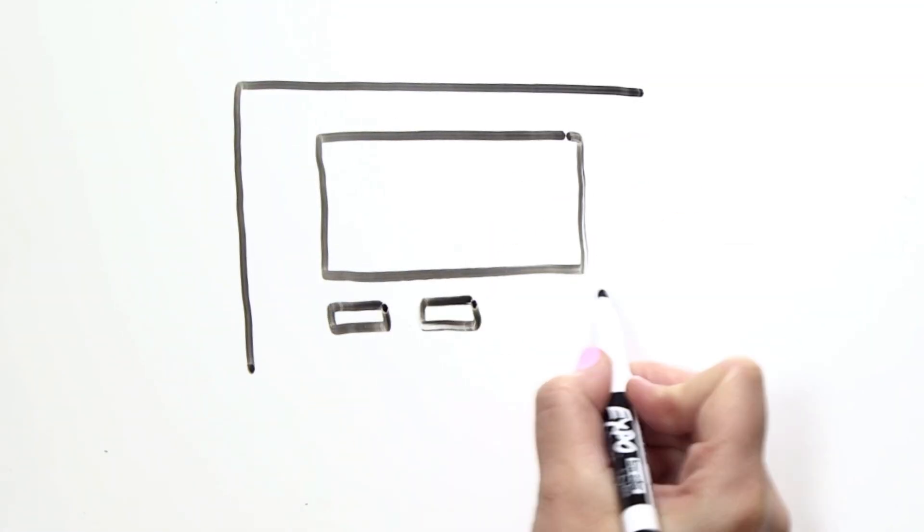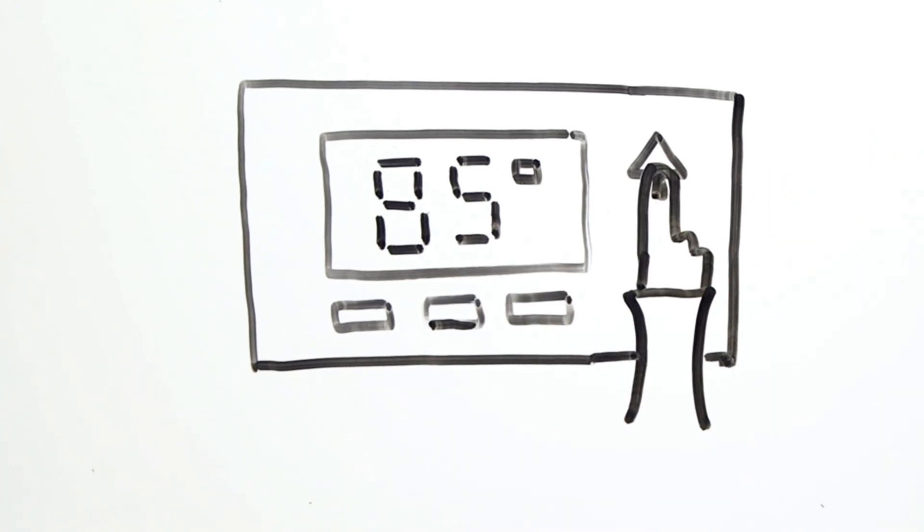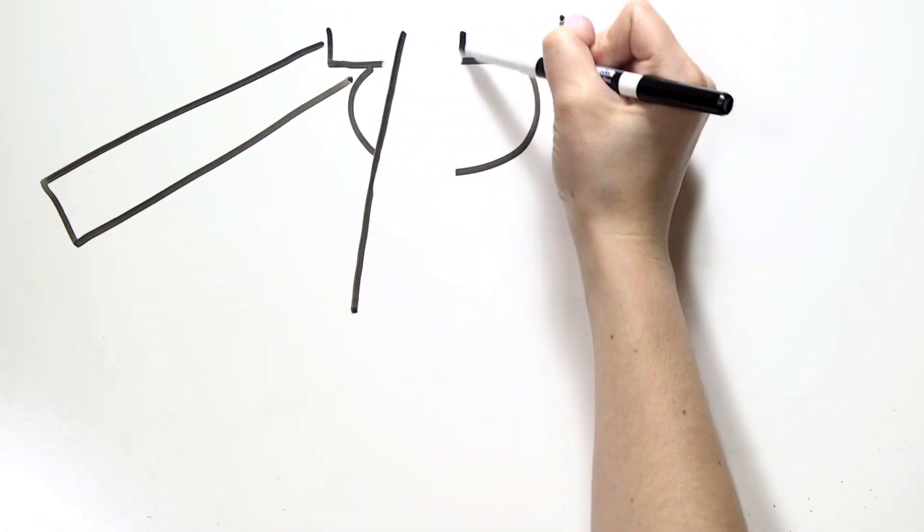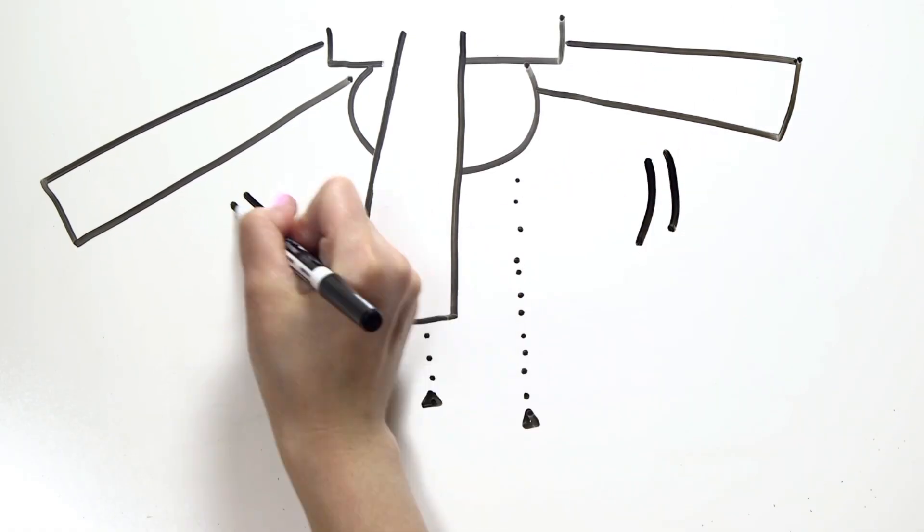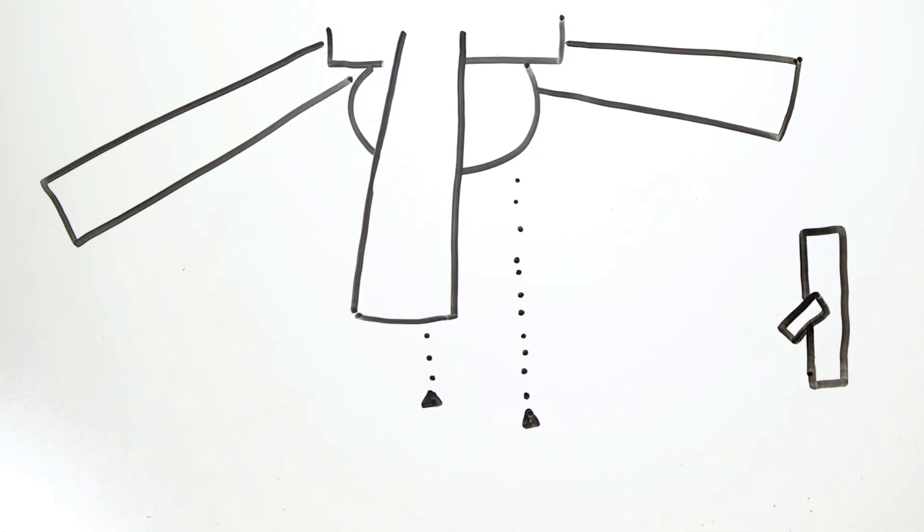In the warmer months, keep your thermostat around 78 degrees when you're home, then nudge it up when you leave. Still feeling a bit warm? Invest in a fan. Ceiling fans allow you to set your thermostat about 4 degrees warmer without feeling a noticeable difference. Just remember, fans cool people, not rooms, so be sure to turn it off when you leave.